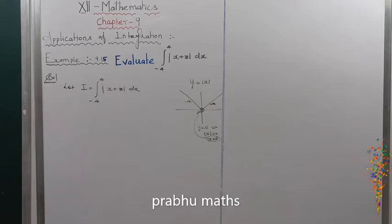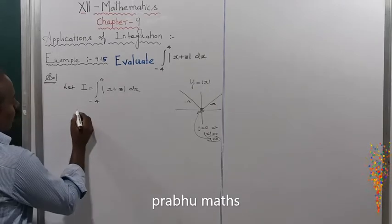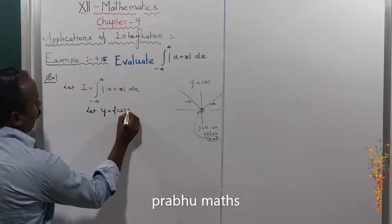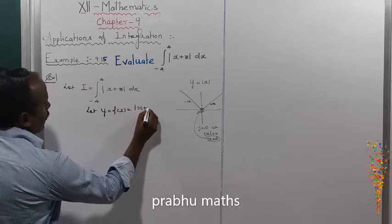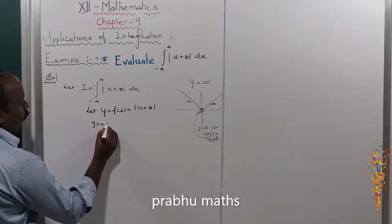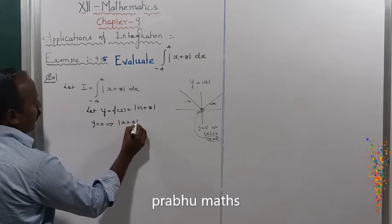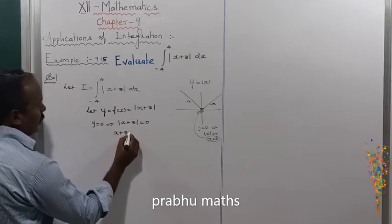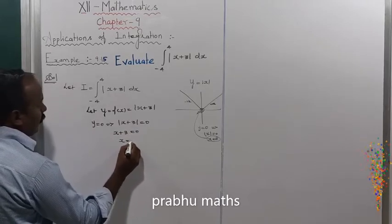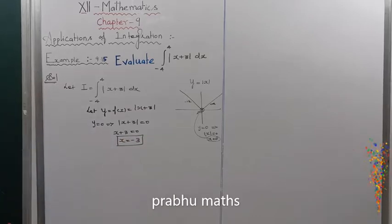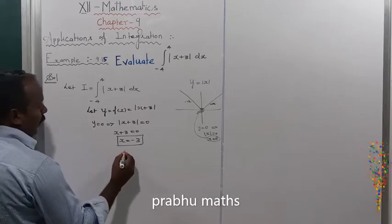Next, we find the meeting point of the given function. Let y equal to f(x) equal to modulus of x plus 3. Setting y equal to 0: modulus of x plus 3 equal to 0, so x plus 3 equal to 0, which gives x equal to minus 3. So the meeting point of the given function is x equal to minus 3.